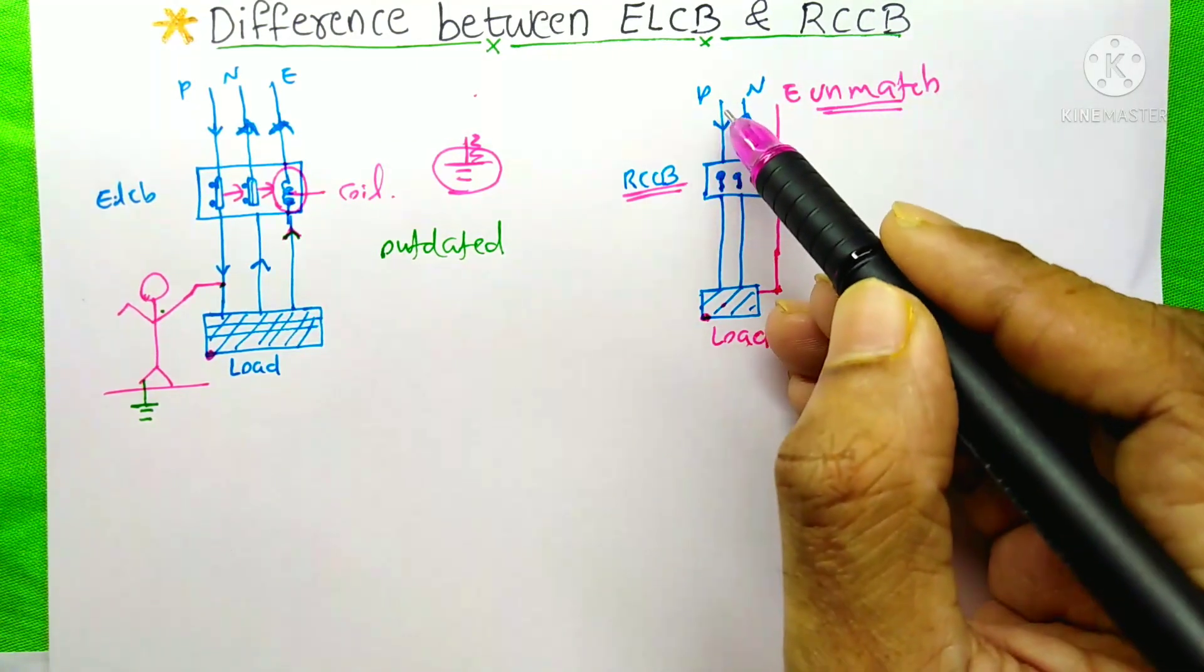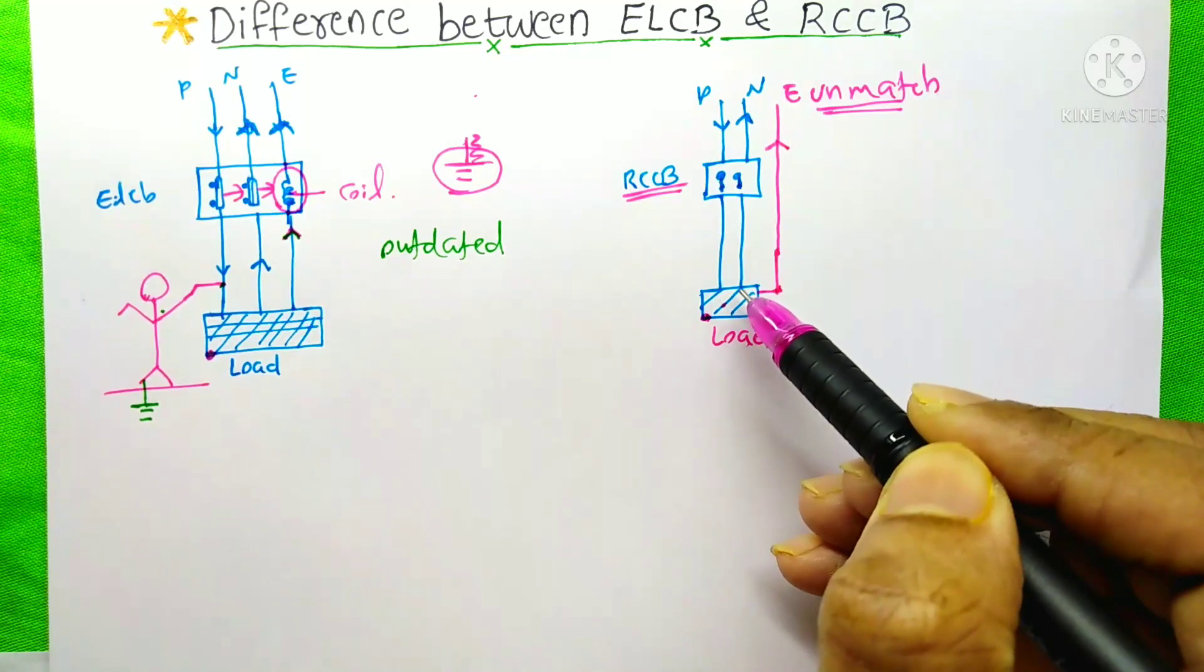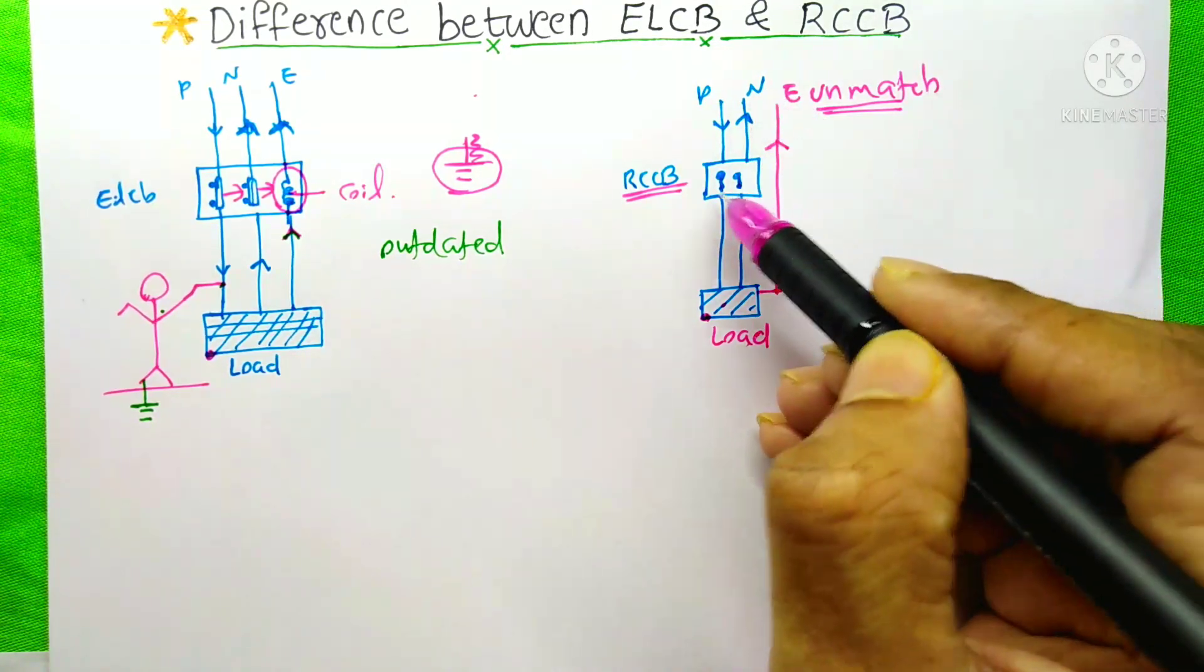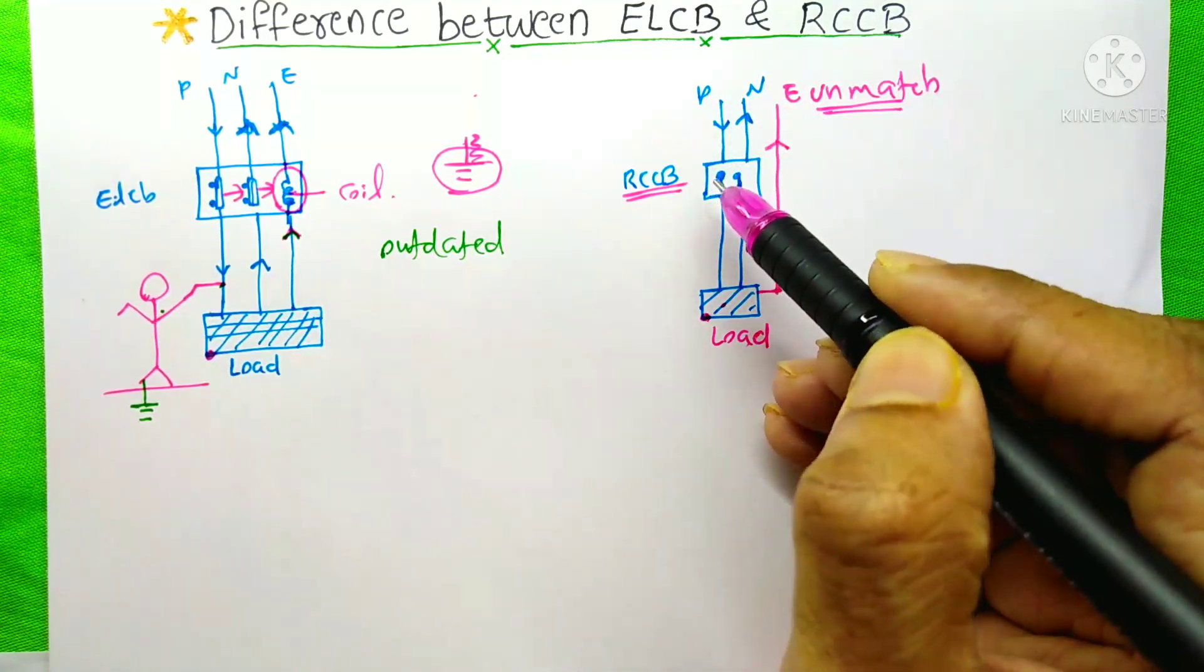At that time, what will happen is, the phase current that comes to this load will not go through the neutral. At that time, the RCCB will sense that and it will trip.